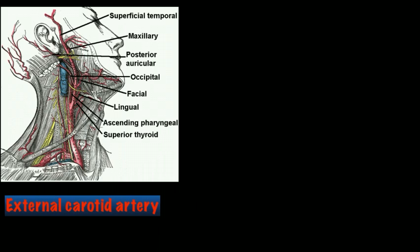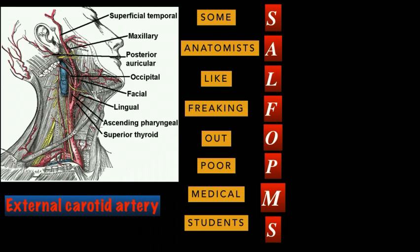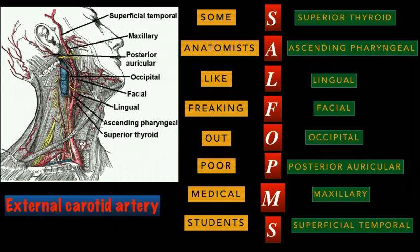Now let us look at a very easy mnemonic that will help you learn and remember the names of the branches for a very long time. The mnemonic is: 'Some Anatomist Like Freaking Out Poor Medical Students.' Taking the first letter from each word gives us the branches: Superior thyroid, Ascending pharyngeal, Lingual, Facial, Occipital, Posterior auricular, Maxillary, and Superficial temporal.